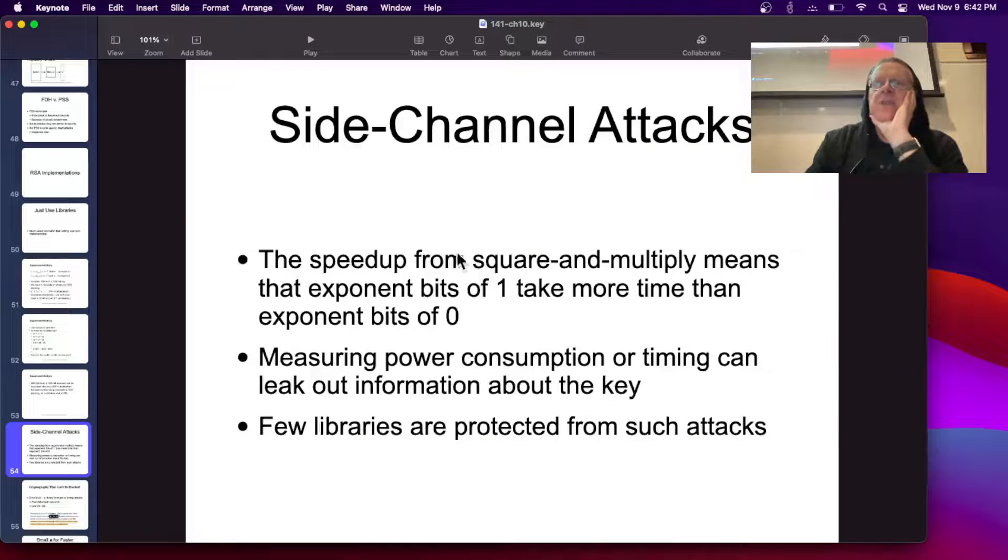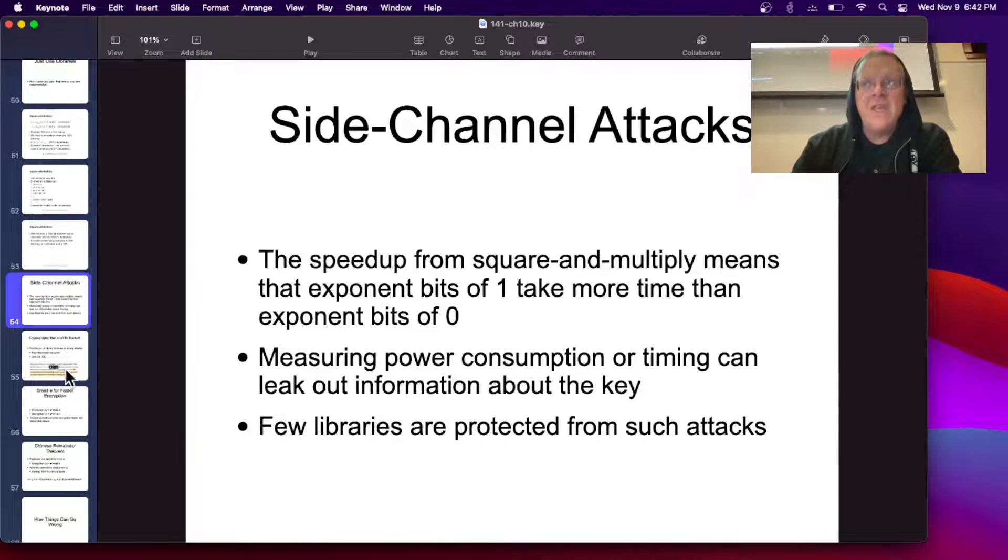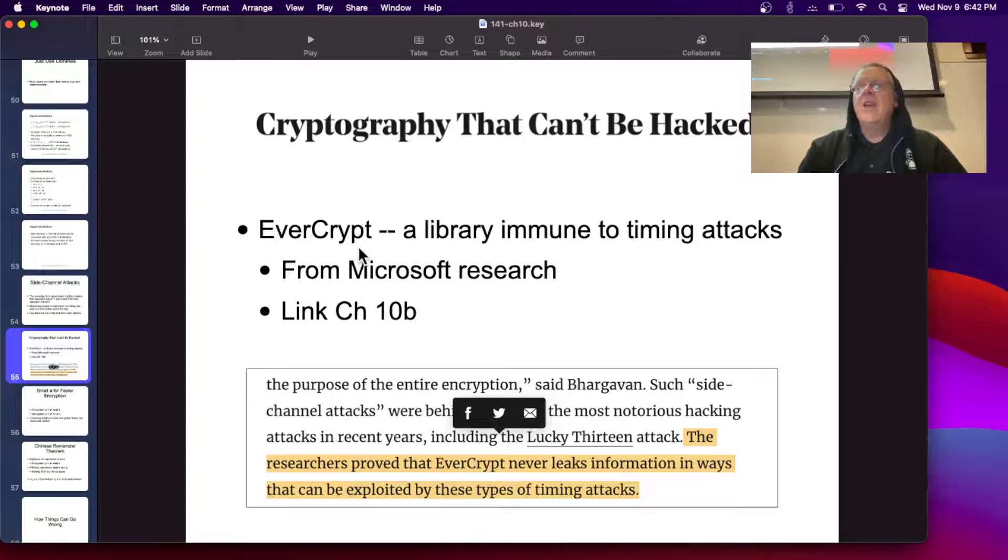So, we talked about side channel. The reason, now the speed up of this means that exponent bits of 1 take more time than exponent bits of 0. And that means if you measure power consumption or timing, it can leak out information about the key, which we've talked about before. Any efficient algorithm that skips steps that are not necessary will therefore leak information about the key. So, if you want to avoid this, you have to write an equal time algorithm that doesn't ever skip any steps, even when it could, to make sure that the total amount of time is always the same, regardless of the key. All right. There is a library called EverCrypt from Microsoft that claims that it is completely safe and can never leak information. So, they have somehow made one that supposedly has a very strong version of this equal time property.